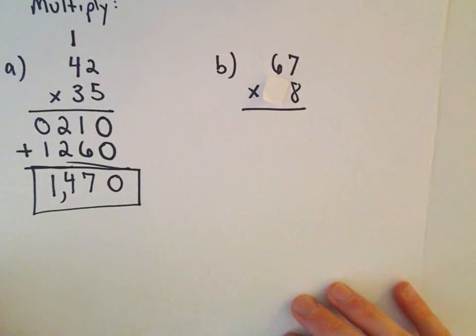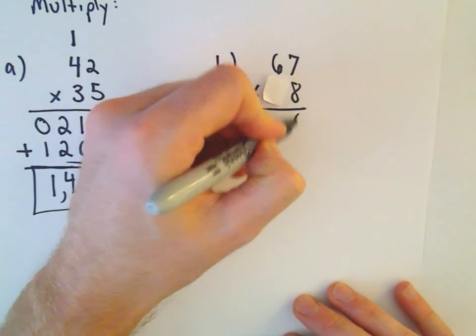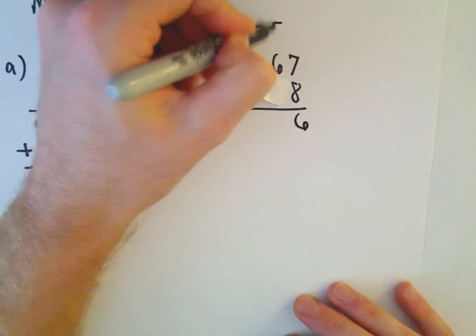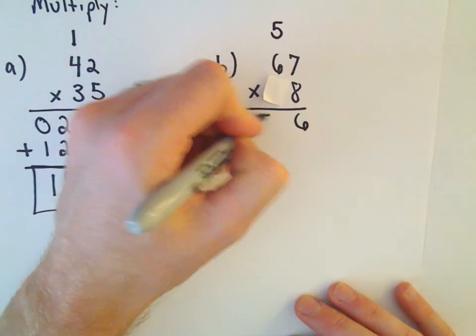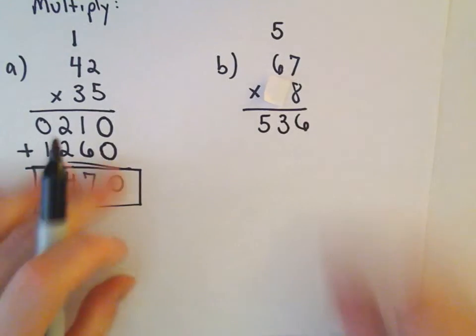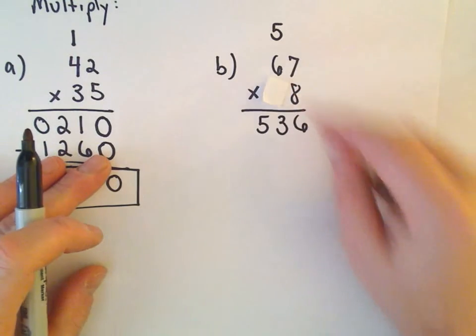Alright, same thing. 8 times 7, that's 56. So I'm going to keep the 6 and carry the 5. Let's see, 8 times 6 is 48. 48 plus 5 is going to be 53. And now I'm going to do, so there's the 8 times 67.